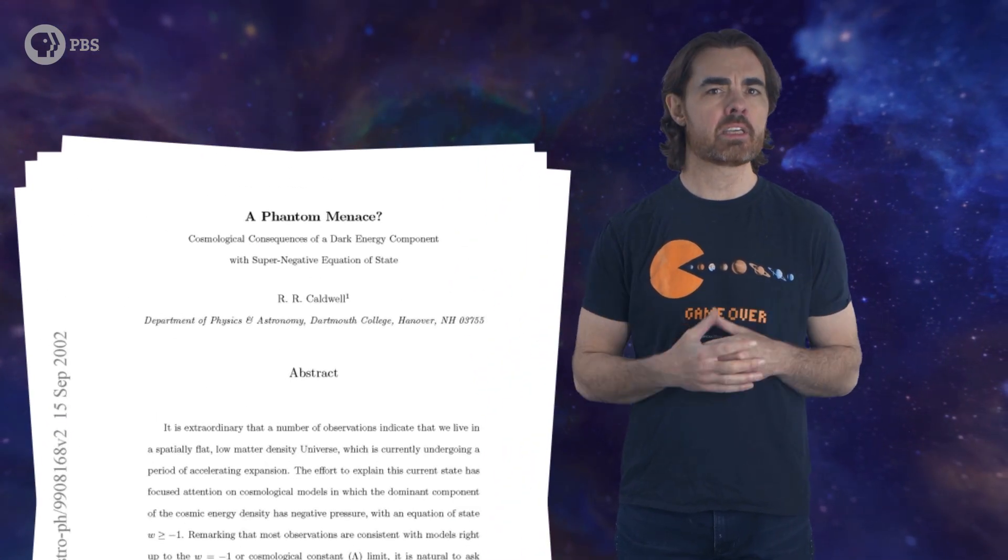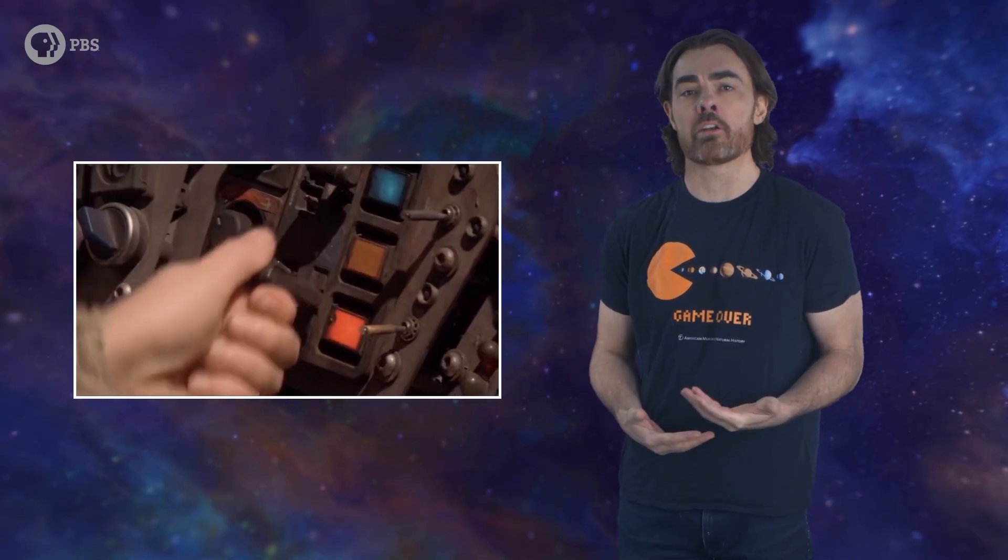That name seems to have been coined by Dartmouth physicist Robert Caldwell in a seminal 2002 paper, The Phantom Menace. And that was three years after the theatrical release, and I guess we still thought it was a sign of the end of the universe. So let's see what this made up math has to say about when the big rip would happen. Any equation of state parameter smaller than negative one means a big rip. The smaller the parameter, the sooner it happens.